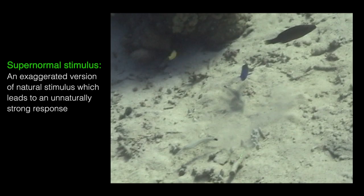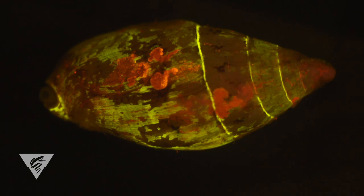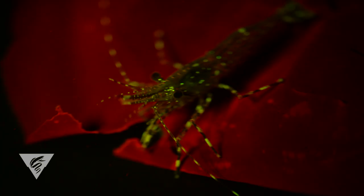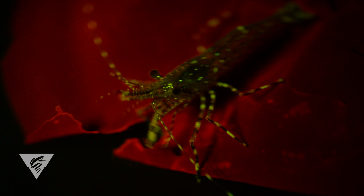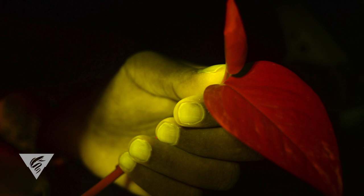Just because something is fluorescent doesn't always mean that the fluorescence serves any particular function. Turtle shells, algae, leaves, bird feathers, vitamin B, even your own fingernails are all fluorescent because of the chemicals they contain, but these colors are not currently known to serve any special purpose.